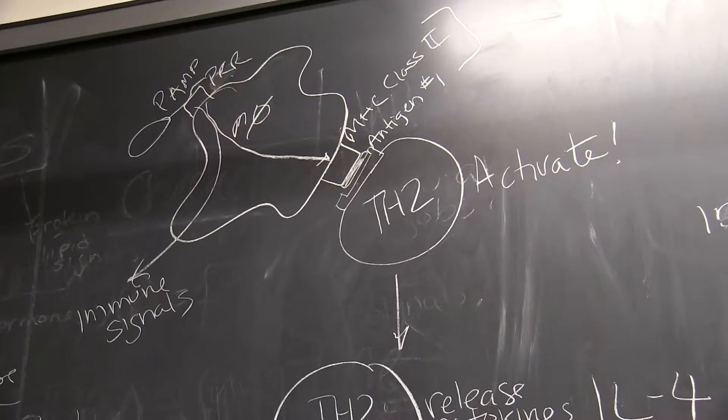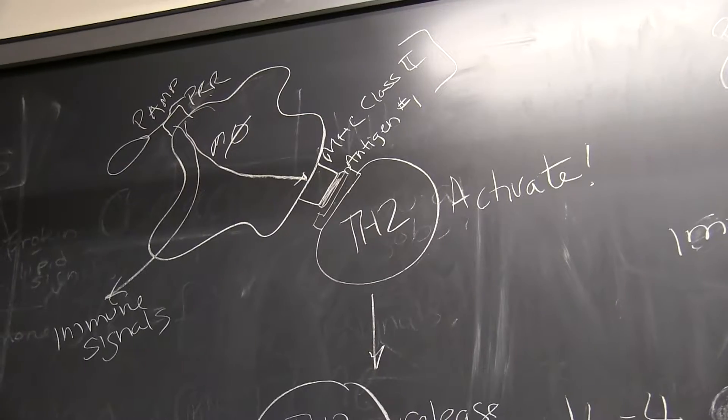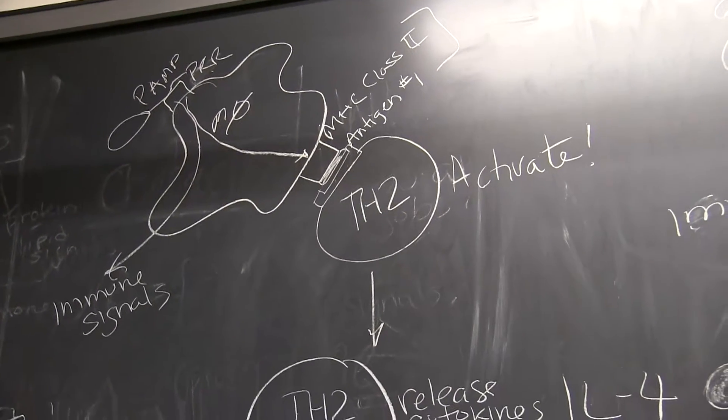Okay team, we're almost through all of these pathways. Now we're going to put together how B cells and antibodies are made.